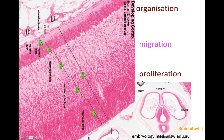Band heterotopia is a malformation of cortical development, and as shown before in this 8-week-old human embryo, the development of the human cortex can be divided into three major steps.